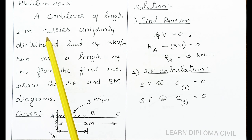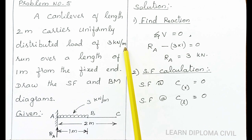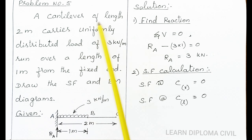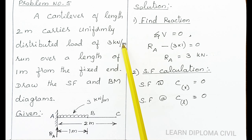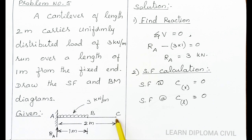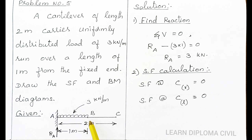Problem number 5. A cantilever of length 2 meters carries a uniformly distributed load of 3 kN/m, run over a length of 1 meter from the fixed end. Draw the shear force and bending moment diagrams. Given: cantilever beam of 2 m, mark 2 m. The left end is the fixed end and the right end is the free end. UDL of 3 kN/m acts over 1 meter from the fixed end. Important points: fixed end is A, end of UDL is B, free end is C. The fixed end reaction is R_A.